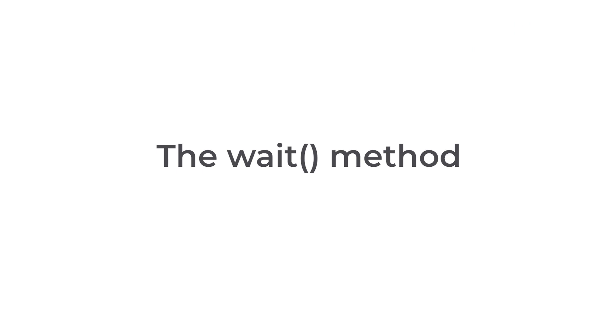The wait method is used to make a running process wait for another function to complete its execution, such as a child process, before having to return to the parent class or event. This wait method in Python is an OS module method that synchronizes the parent and child processes, implying that the parent will stand in line for the child process to complete its execution.